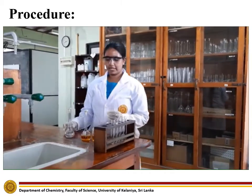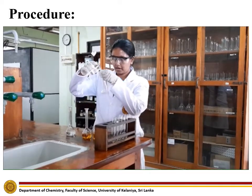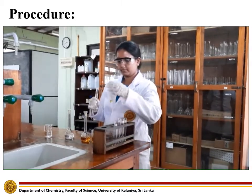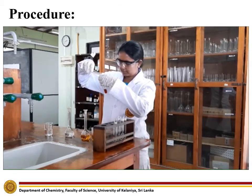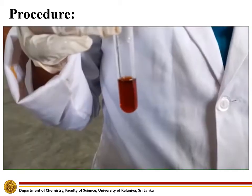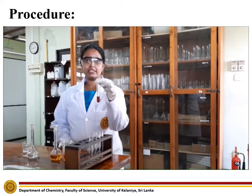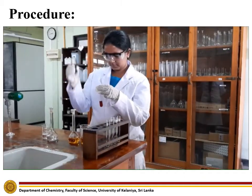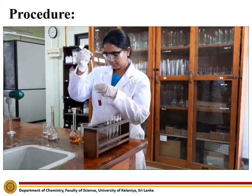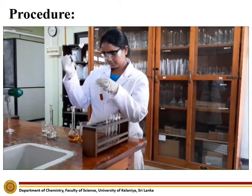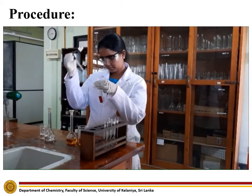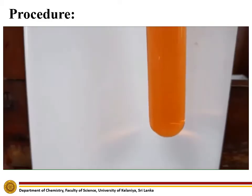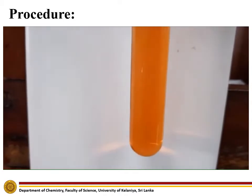Now let's add 2 ml of potassium thiocyanate to the same test tube. Now let's dilute this blood red solution until it becomes a pale orange color using distilled water. This is the pale orange solution we obtained after diluting.